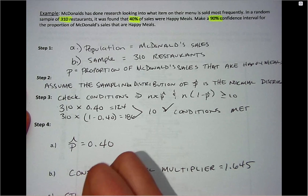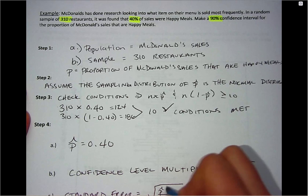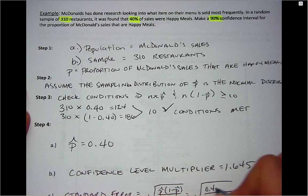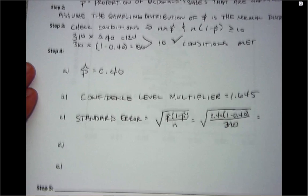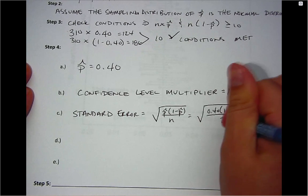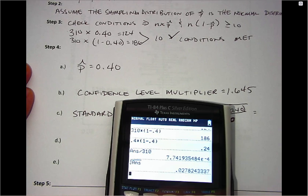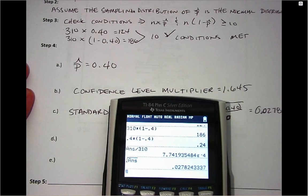Then we would calculate standard error. And that is using the formula P hat times 1 minus P hat over N, which is the square root of 0.4 times 1 minus 0.4 over 310. So when you do these, I like to save myself from figuring out where the decimal values go, or the parentheses go, by just entering it and using the answer function. And then remember you would go out to the 4 decimal places or the ten thousandths place. So I have a standard error of 0.0278.